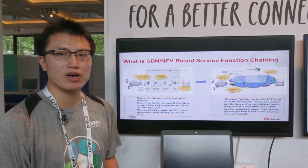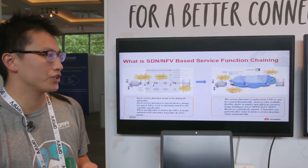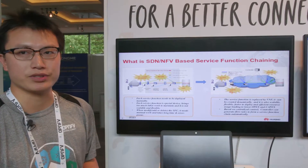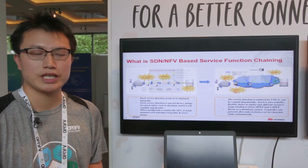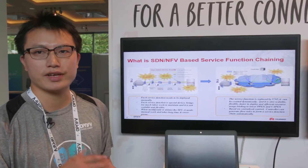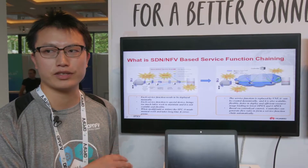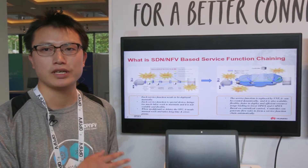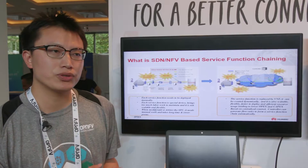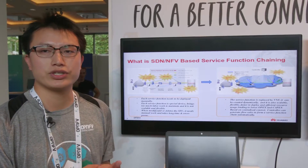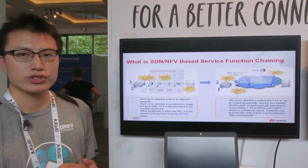The first slide talks about what is SDN/NFV-based service function chaining. Service function chaining is not a new concept. It consists of several kinds of different service functions. The flow classifier can add a tag on the flow, and then different kinds of flows can be processed by different kinds of service function chains. This technology can be used in mobile network edge, residential network edge, and enterprise network edge.